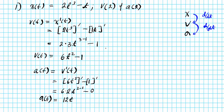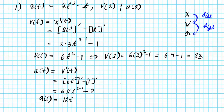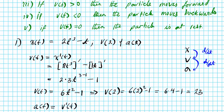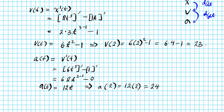Now with these two functions, we can find v(2) and a(2). Velocity at t = 2 is 6 times 2² minus 1, which is 6 times 4 minus 1, giving 24 − 1 = 23. Acceleration at t = 2 is 12 times 2 = 24. The problem indicated that distance is in meters and time is in seconds, so velocity is in meters per second and acceleration is in meters per second squared.